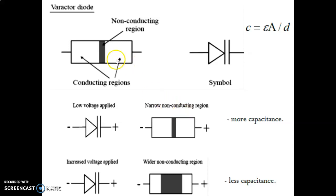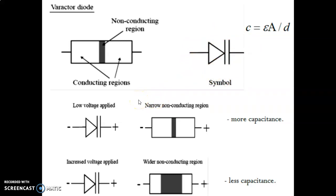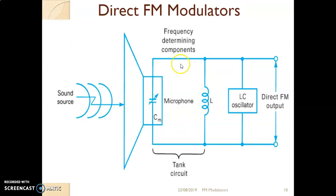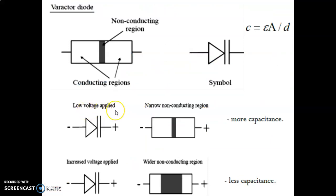The varactor diode is nothing but a P-N junction diode. There is P-type material and N-type material; when they combine, a depletion region forms, which we call the non-conduction region. On both sides of the non-conduction region, we have conduction regions. This is the symbol of the varactor diode. One important point to remember: the varactor diode will always work in reverse bias.